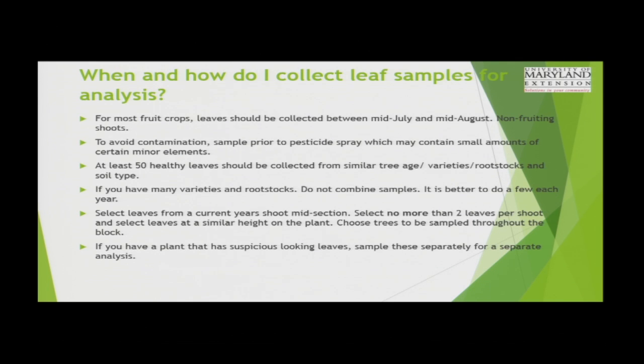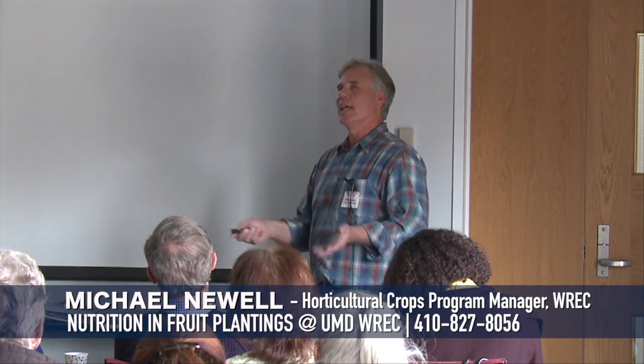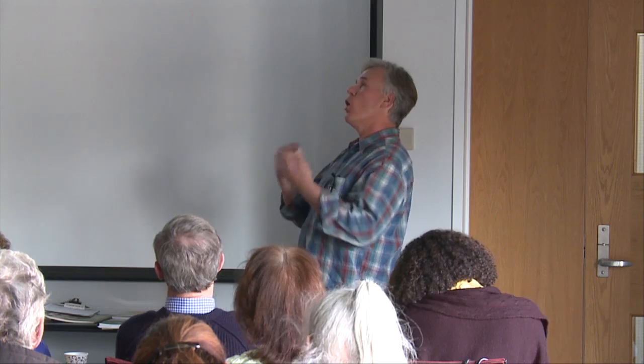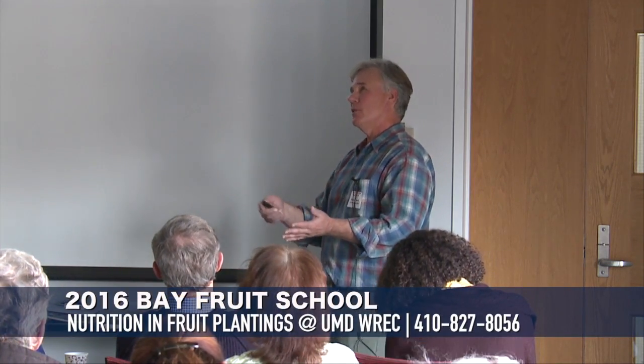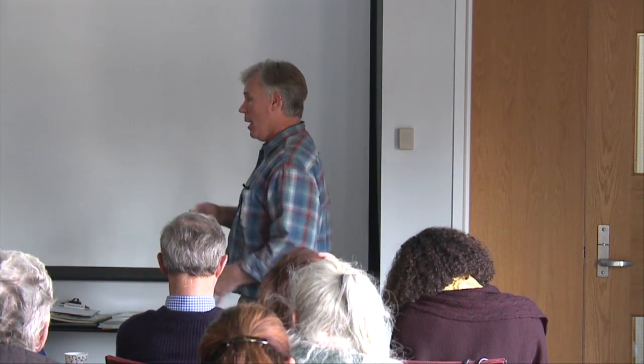When and how do I collect leaf samples for analysis? For most fruit crops, it's been determined through years of research that the best time to collect leaf samples is between July 15th and August 15th for all the deciduous fruits we grow in our area — the plants are most stable at that time. You want to avoid contamination, because some materials we spray, like Mancozeb, have manganese and zinc included in those products. You want to do it at the end of a spray cycle — if you're planning to spray tomorrow, do your leaf samples today. You want to sample at least 50 healthy leaves for larger-leaved crops; with blueberries, you probably want 75 to 100 leaves.